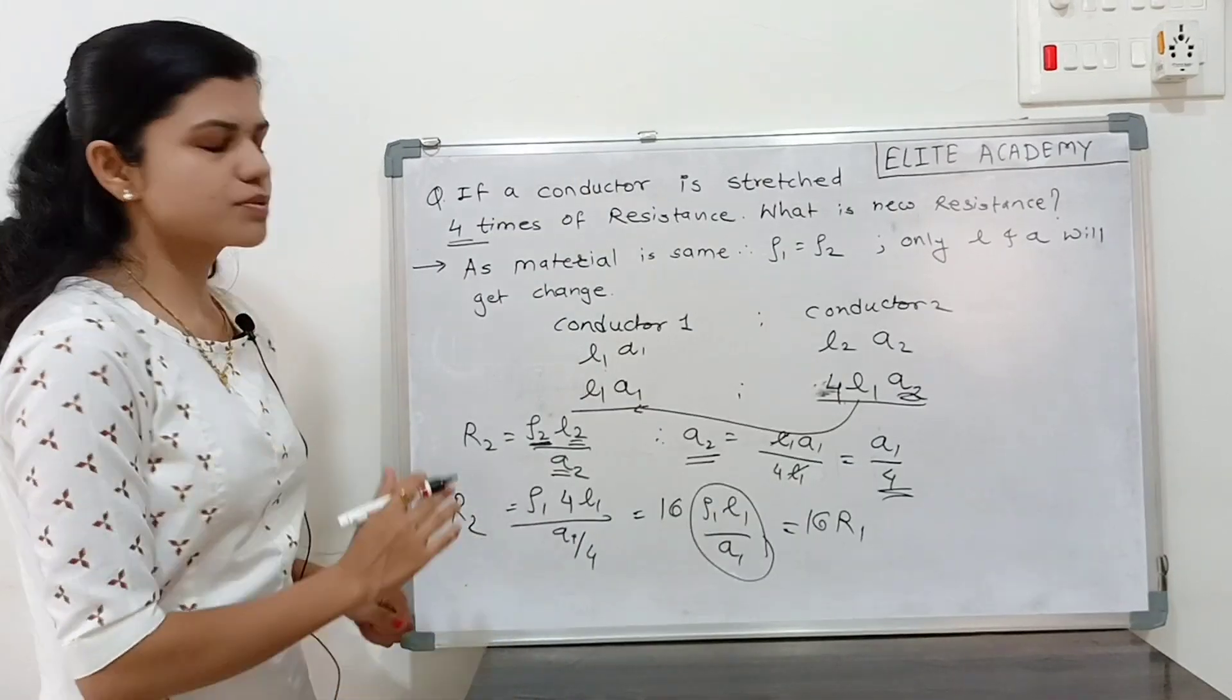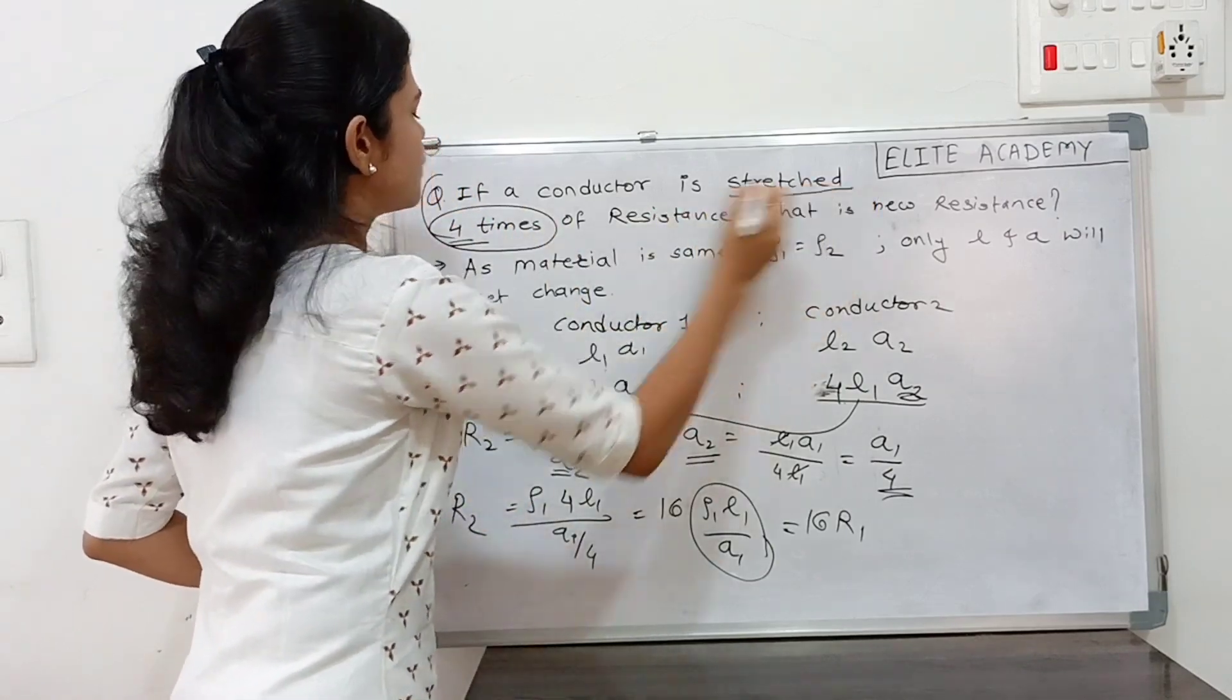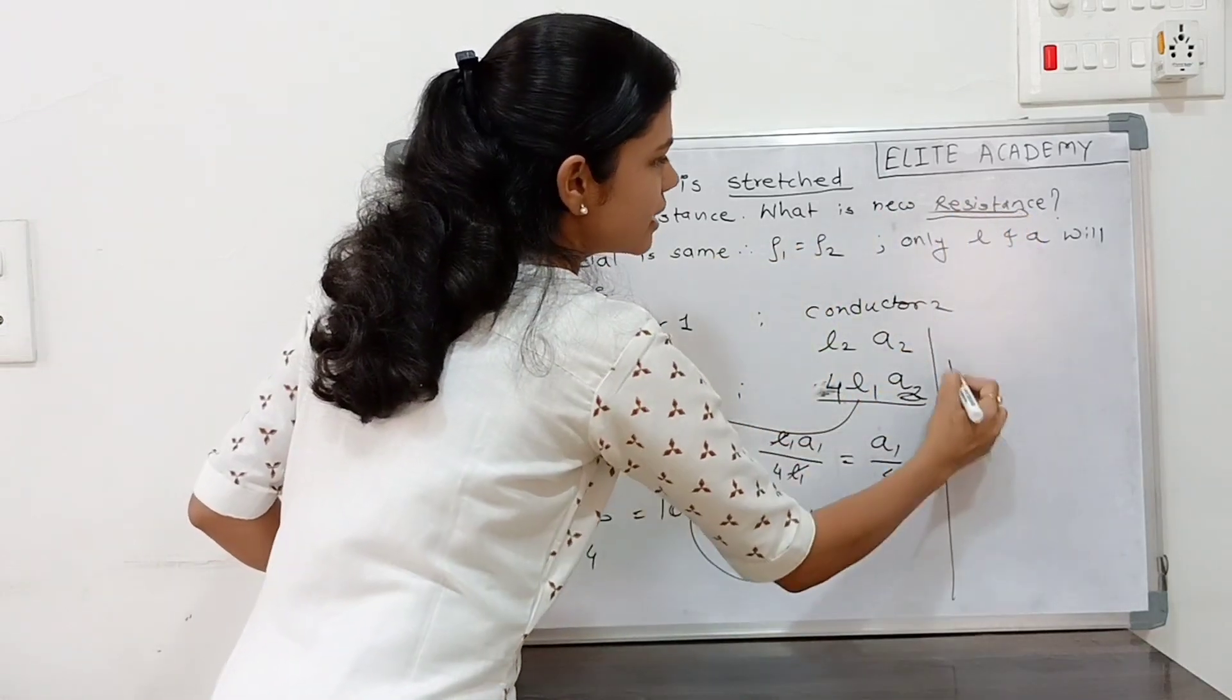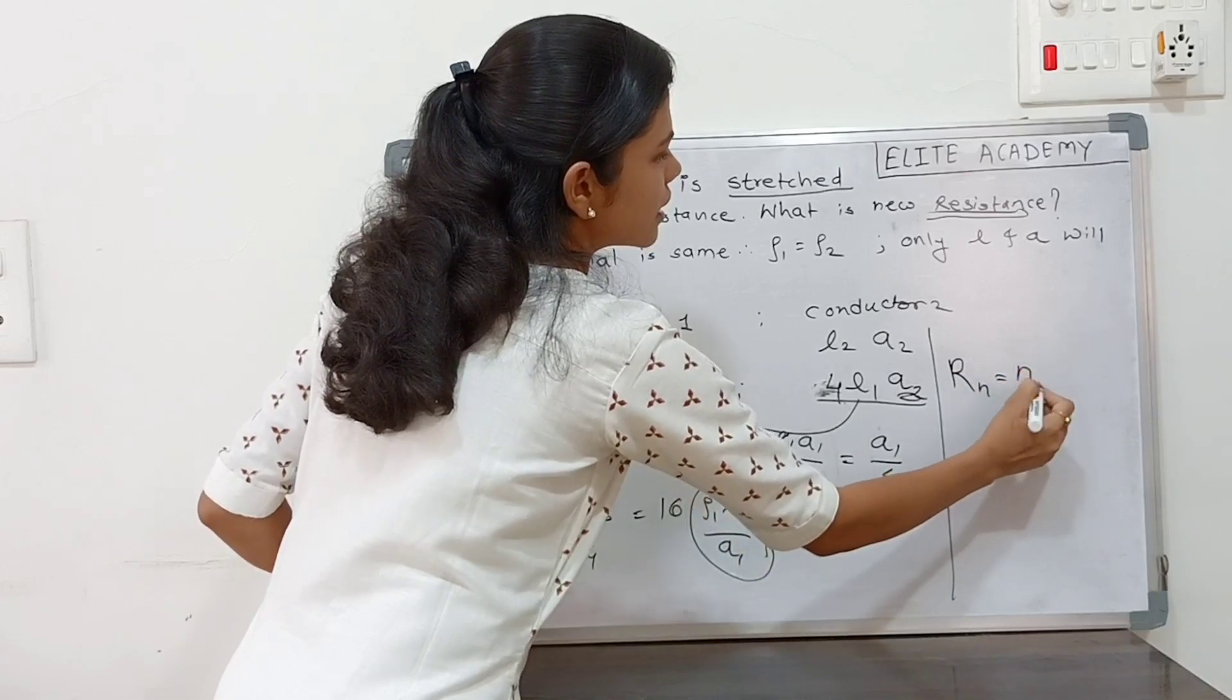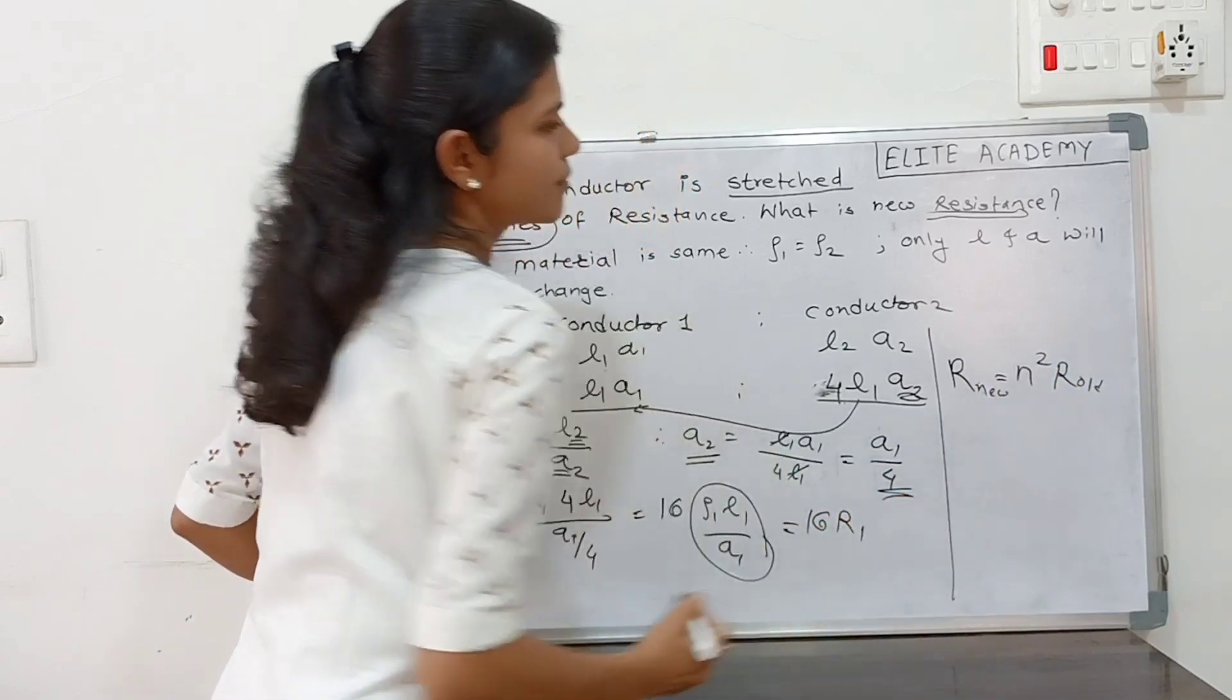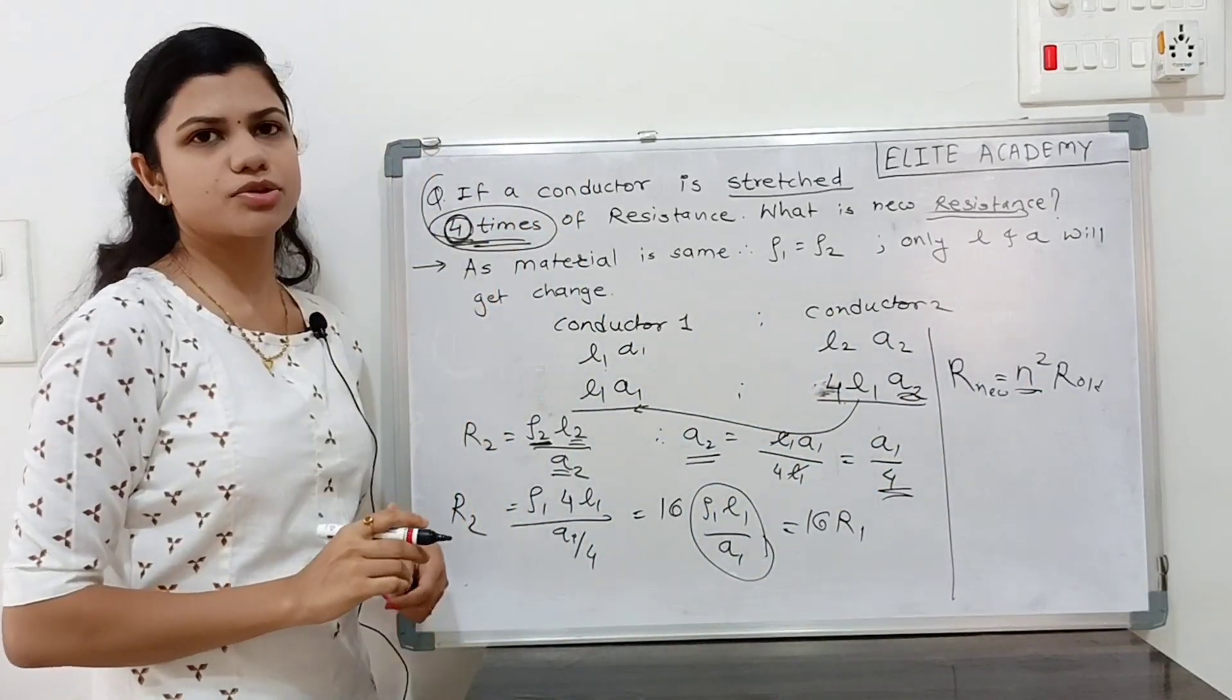16 times of R1. Therefore, from this we can say that if question asked in this way, stretch four times and we have to find out the resistance R2, then we can directly say that the new R is equal to N square of old R.